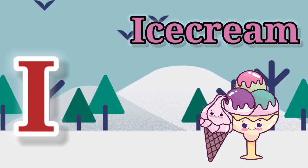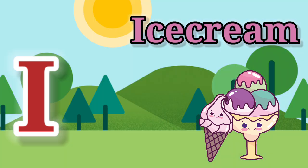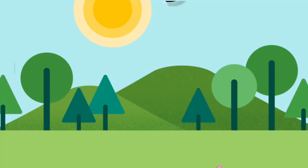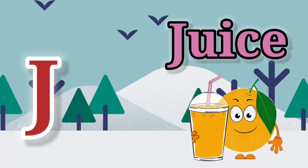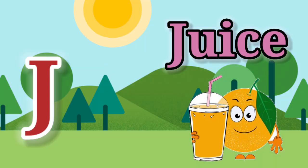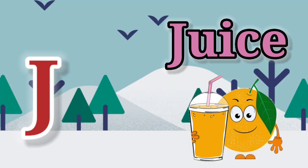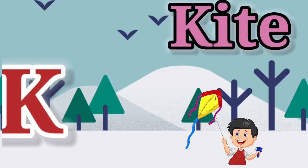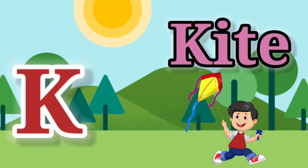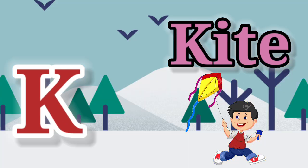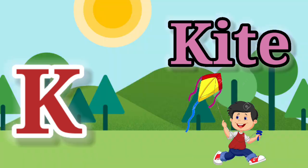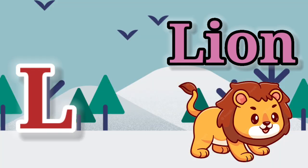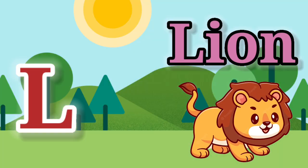I. I for ice cream. J. J for juice. K. K for kai. L. L for lion.